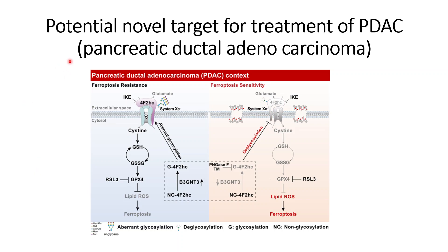In this video we will discuss a potential novel target for the treatment of pancreatic cancers. In many of our videos we have discussed that pancreatic cancers lead to aberrant glycosylation, represented by 'G' in this figure, while deglycosylation is represented separately. 'G' represents glycosylation and 'NG' represents non-glycosylation.